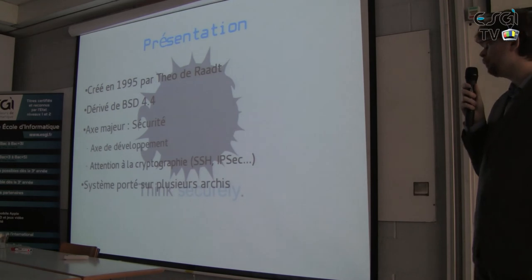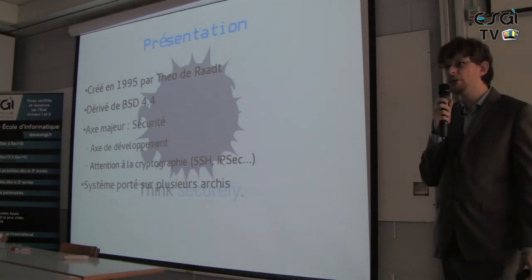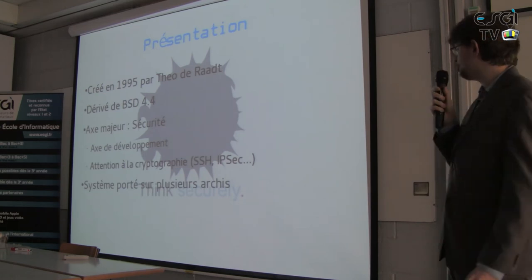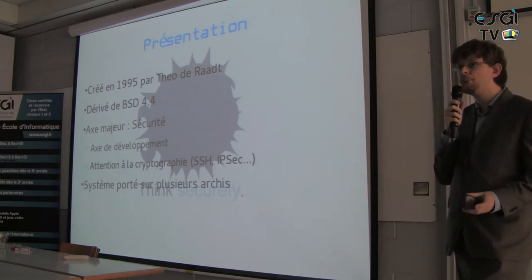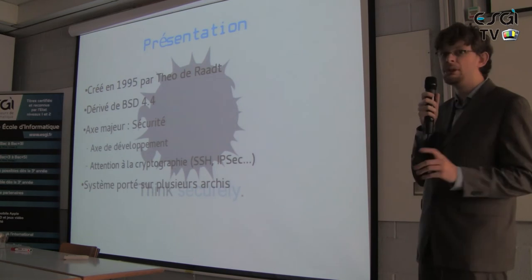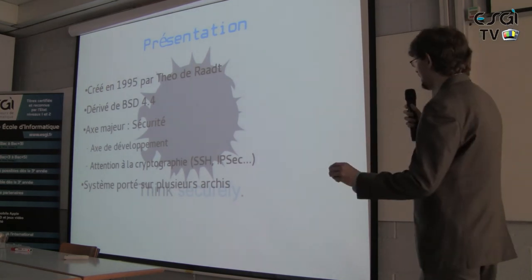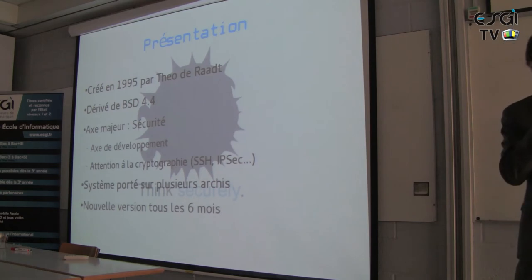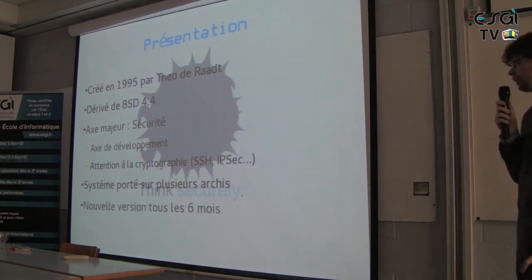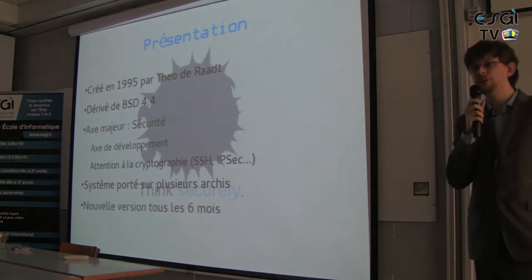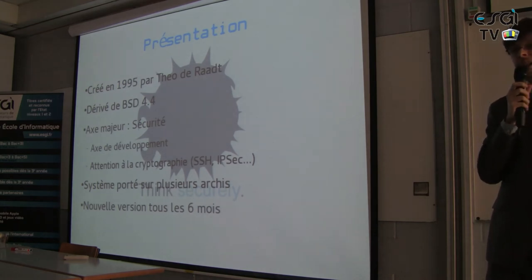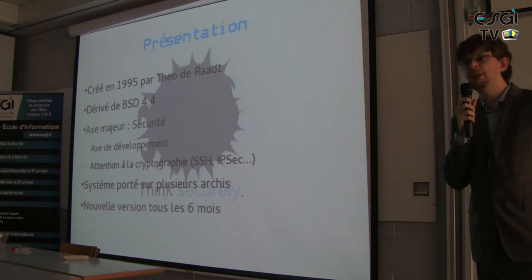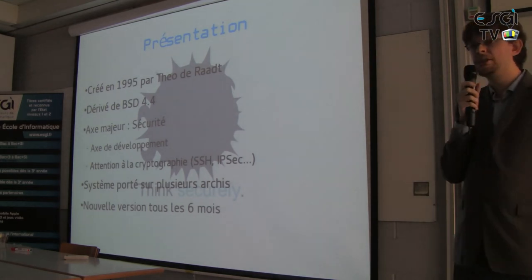There are a bunch of different architectures supported. You can run it on various boards. It's quite widely ported. On the other hand, the Raspberry Pi is not supported because they don't like it. We have a new version every six months. One month before the release, there is a complete freeze for development of the distribution. It's important to know that when you look at OpenBSD, it's important to look at the changelog of the previous version.